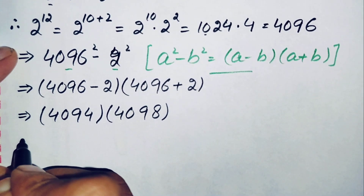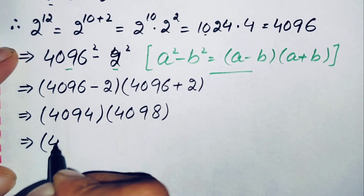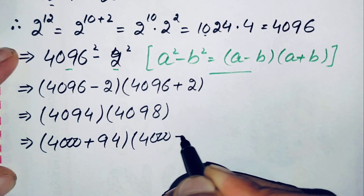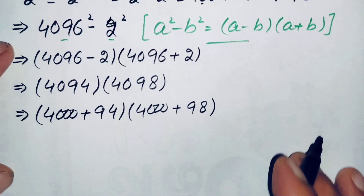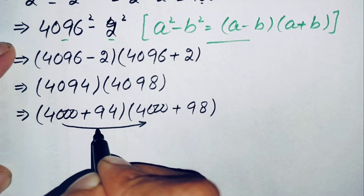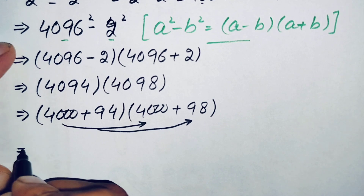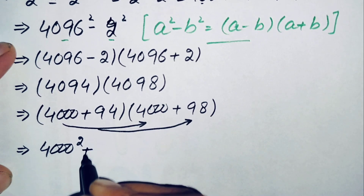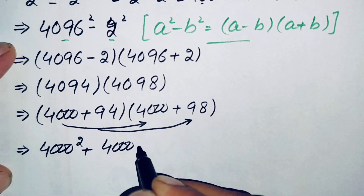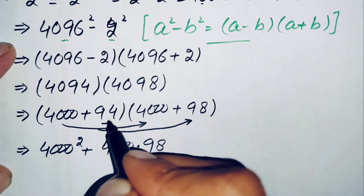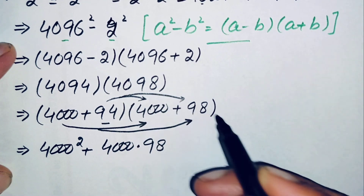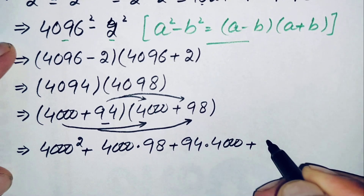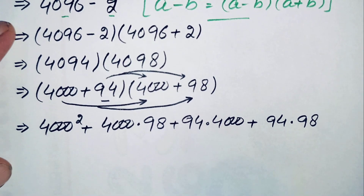Next, we multiply 4094 times 4098 by splitting them: we write 4094 as 4000 plus 94 and 4098 as 4000 plus 98. Expanding, we get 4000 times 4000, plus 4000 times 98, plus 94 times 4000, plus 94 times 98.